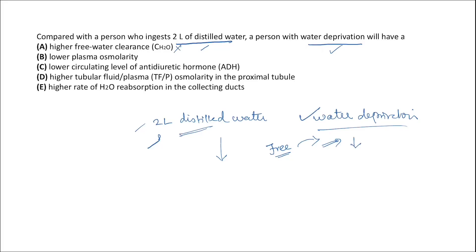The second choice is lower plasma osmolality. Water deprivation will cause plasma osmolality to go higher, so this is also wrong. The third choice is lower circulating level of antidiuretic hormone. Water deprivation and the increase in plasma osmolality stimulate ADH release, which helps conserve water, so ADH levels will be higher — the third choice is also wrong.